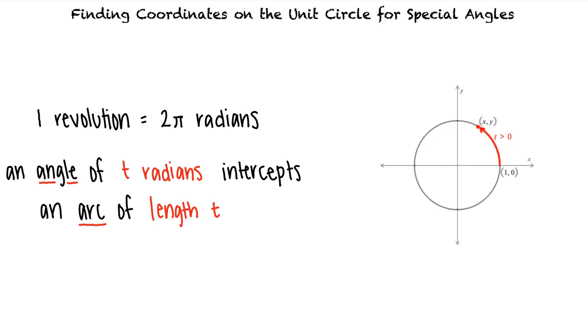If t is positive, we move counterclockwise. And if t is negative, we move clockwise.